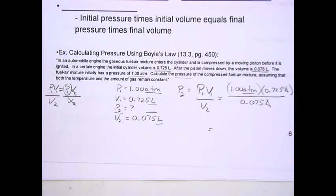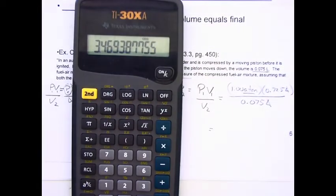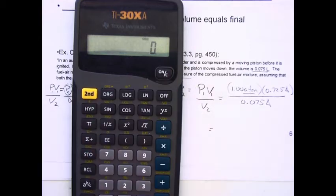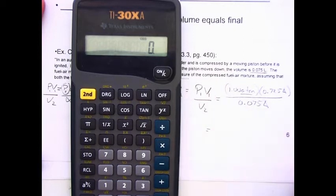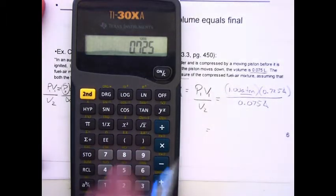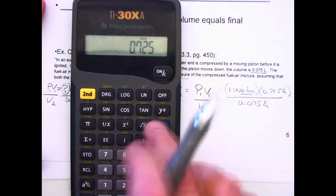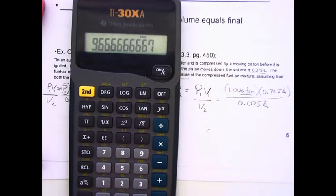On my calculator, any number that's on top, I multiply. If the number's on the bottom, I divide. So I simply take 1, multiply it by 0.725. So I take 0.725 and divide by 0.075 equals.